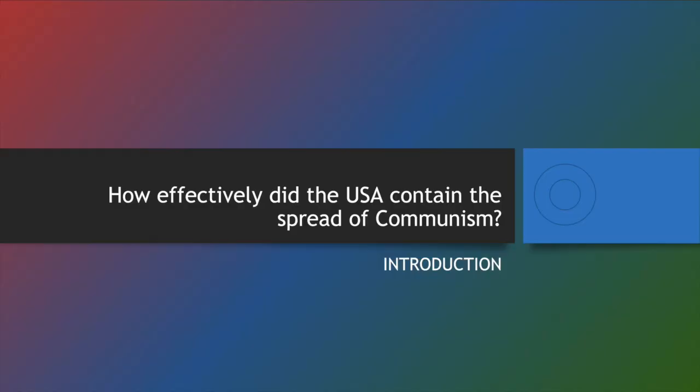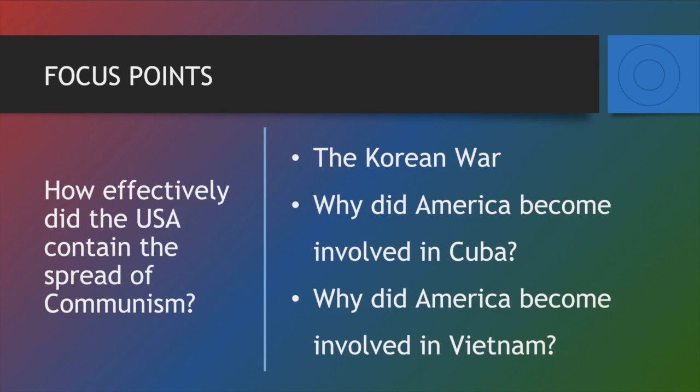Hi everyone, this is Mr. Trio. This week we will begin a new core topic: how effectively did the USA contain the spread of communism? In many ways this unit follows up on our previous one, which was about who was to blame for the Cold War. This topic also focuses on Cold War topics, so you may want to spend a little time working with these two chapters together because they have a lot of similarities.